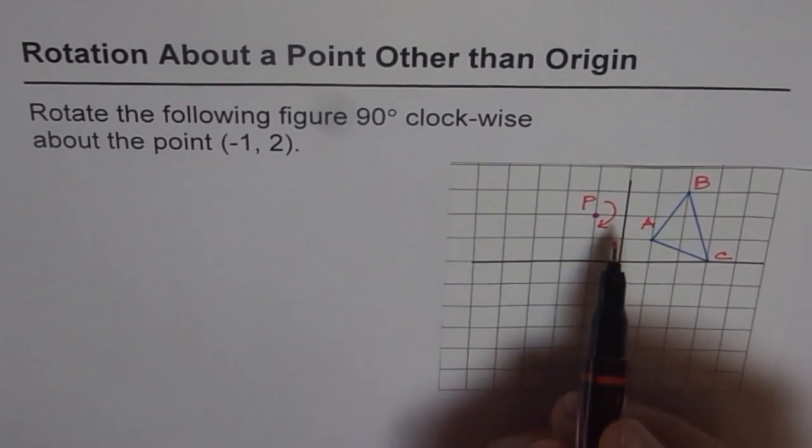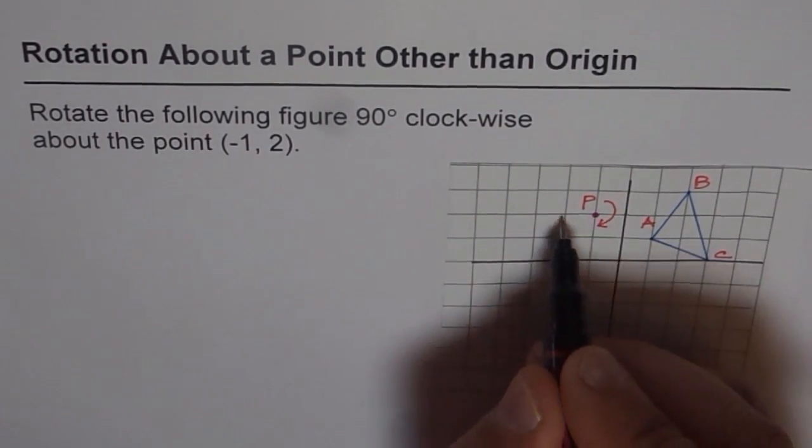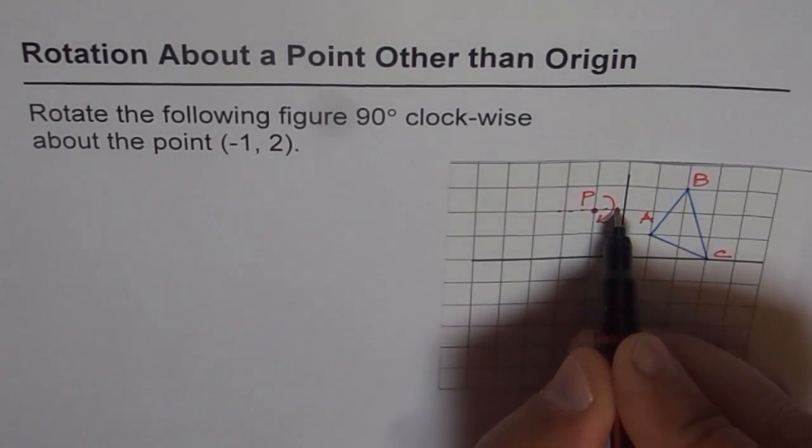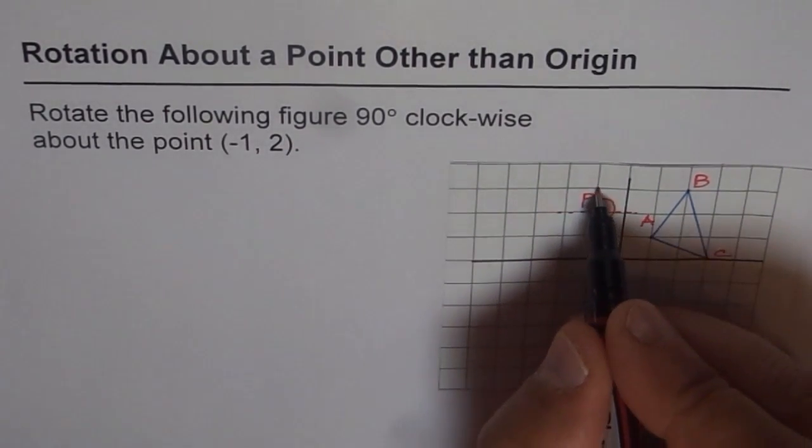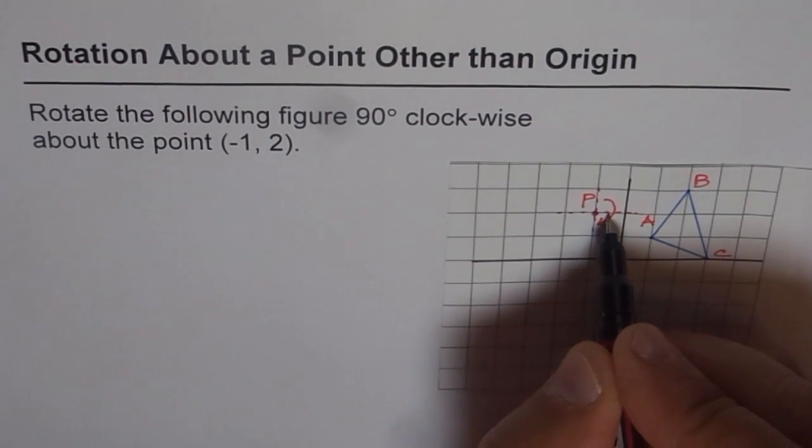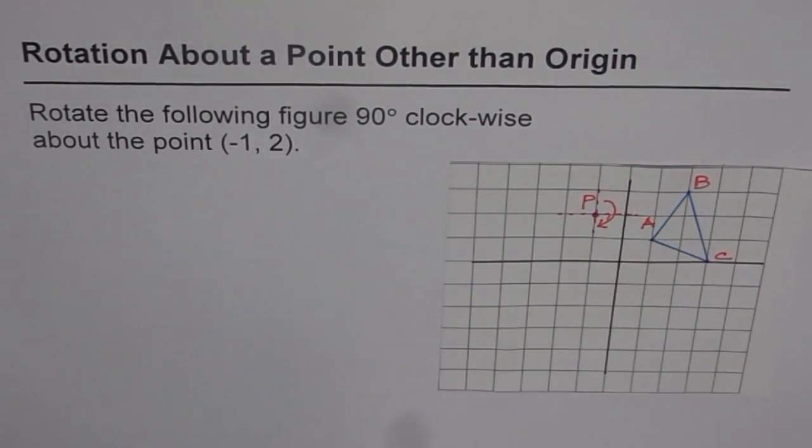90 degree means, if I have x like this and y axis like this, then that is 90 degrees. So that is the rotation we want to do on the given object.